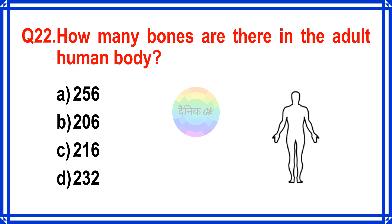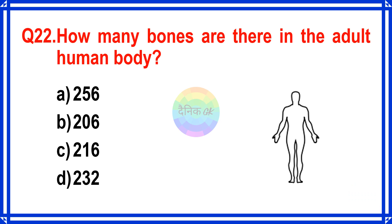How many bones are there in the adult human body? The correct answer is Option B. 206.